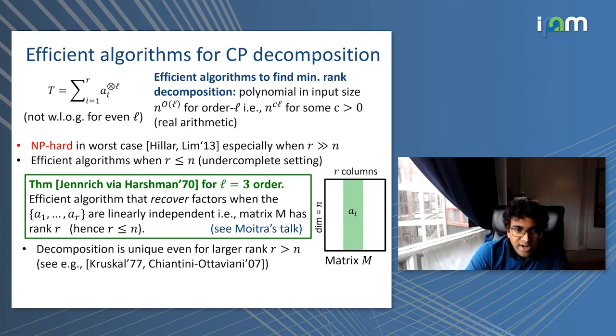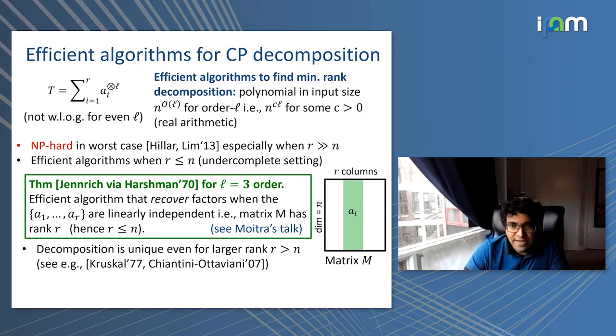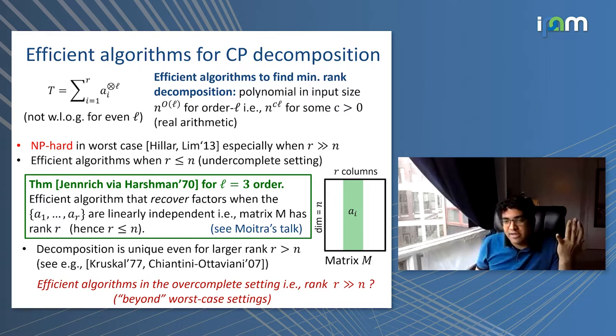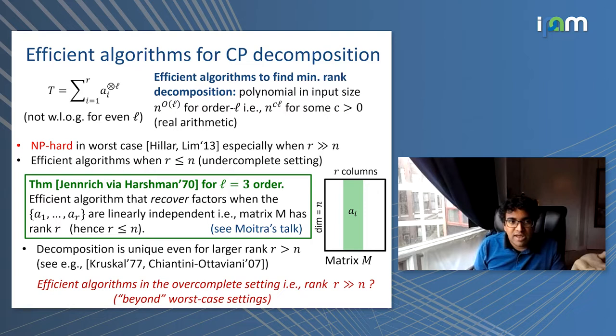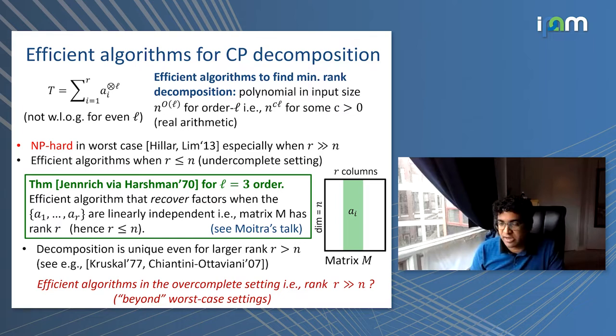The only condition you need for Jenrich's algorithm is that if you write down the matrix M, where the columns correspond to the factors of the decomposition — it's an N×R matrix with the R factor vectors as columns — you want this matrix to be full rank. Of course the rank can be much larger than N, and the question is what can we say about efficient algorithms in this over-complete setting, when the rank is much larger than N.